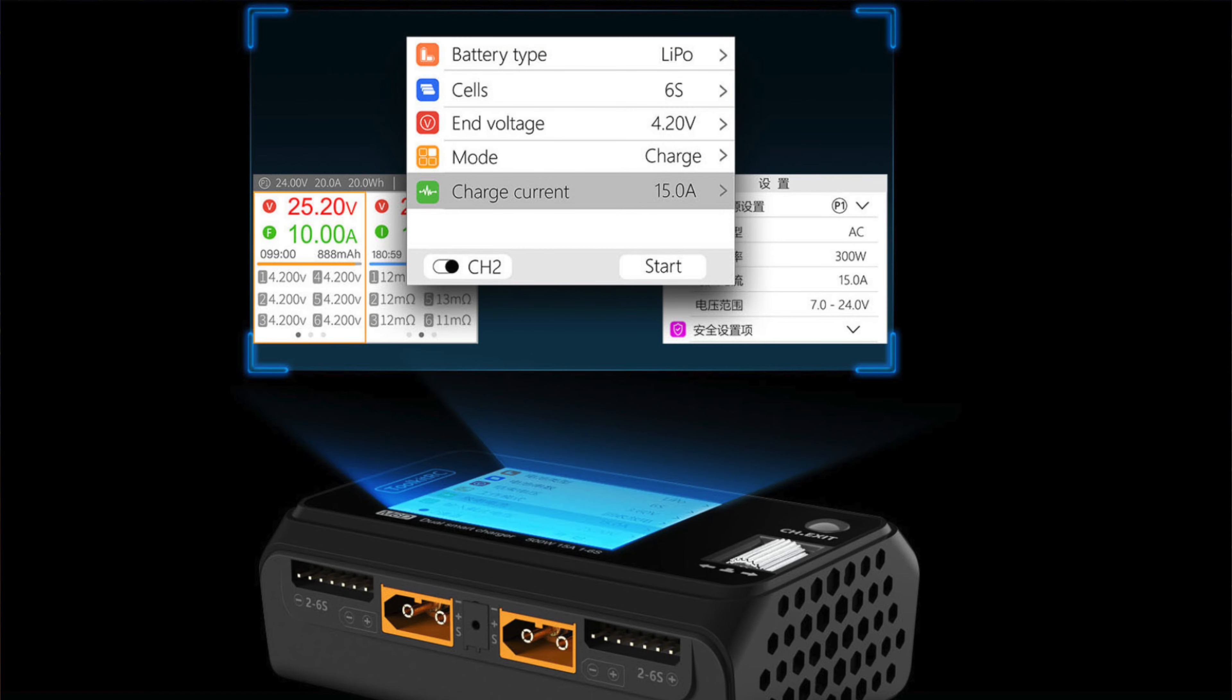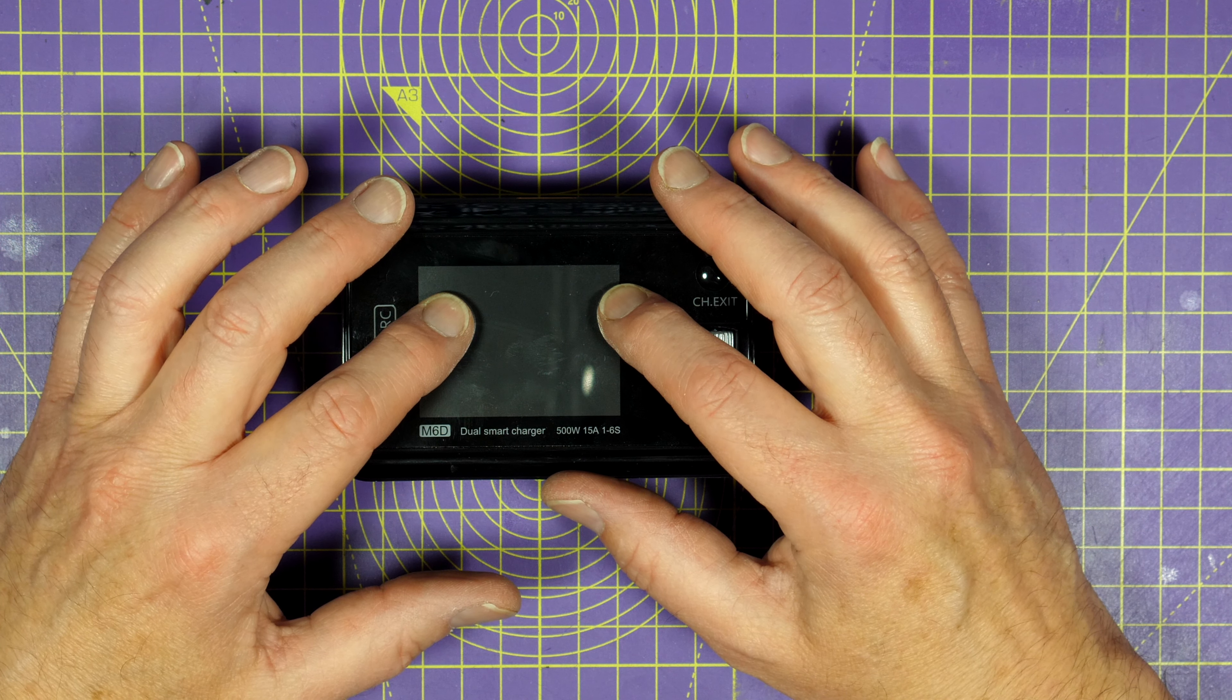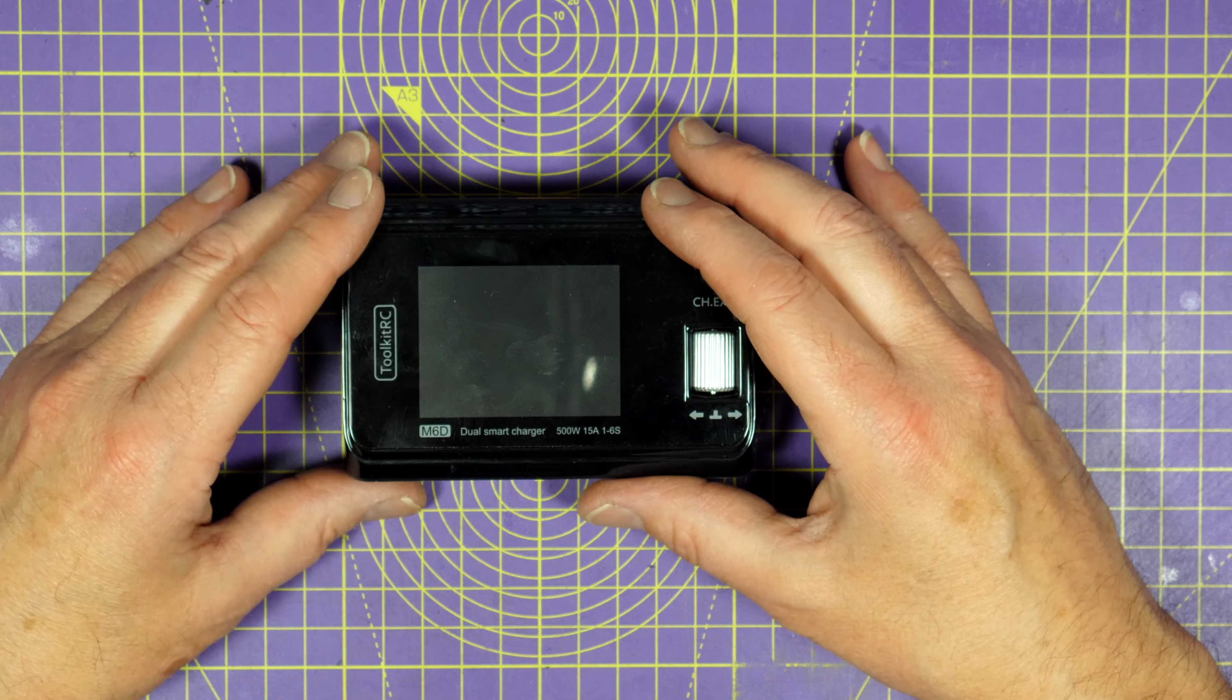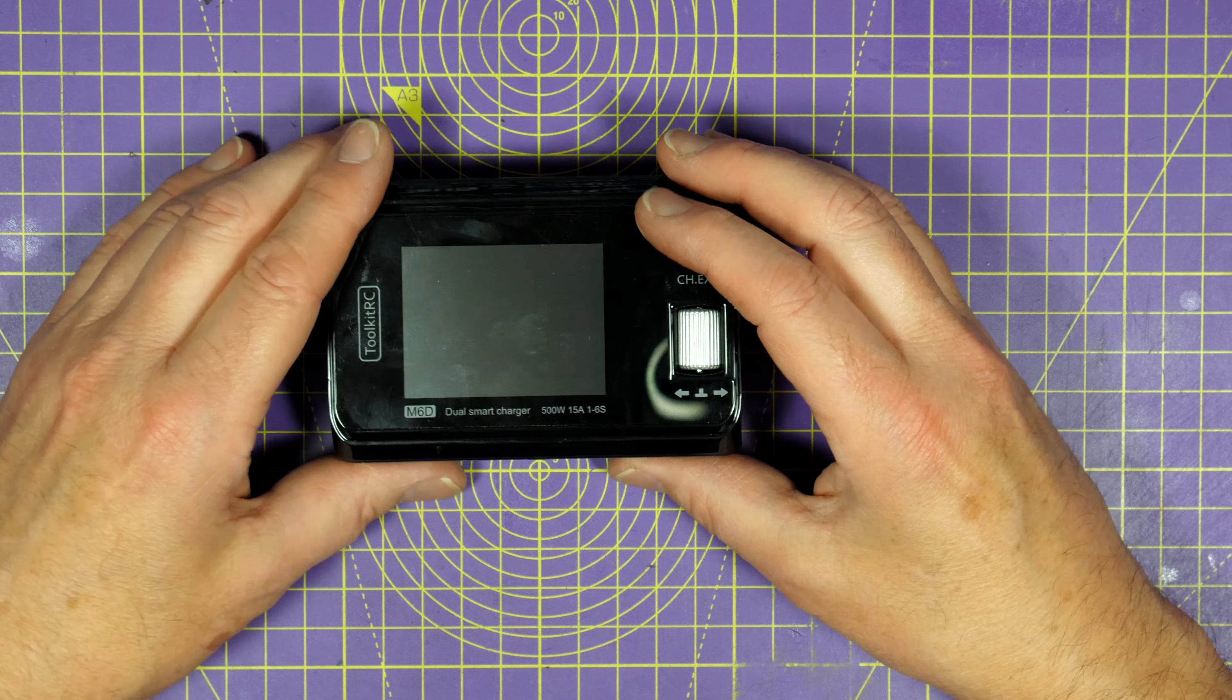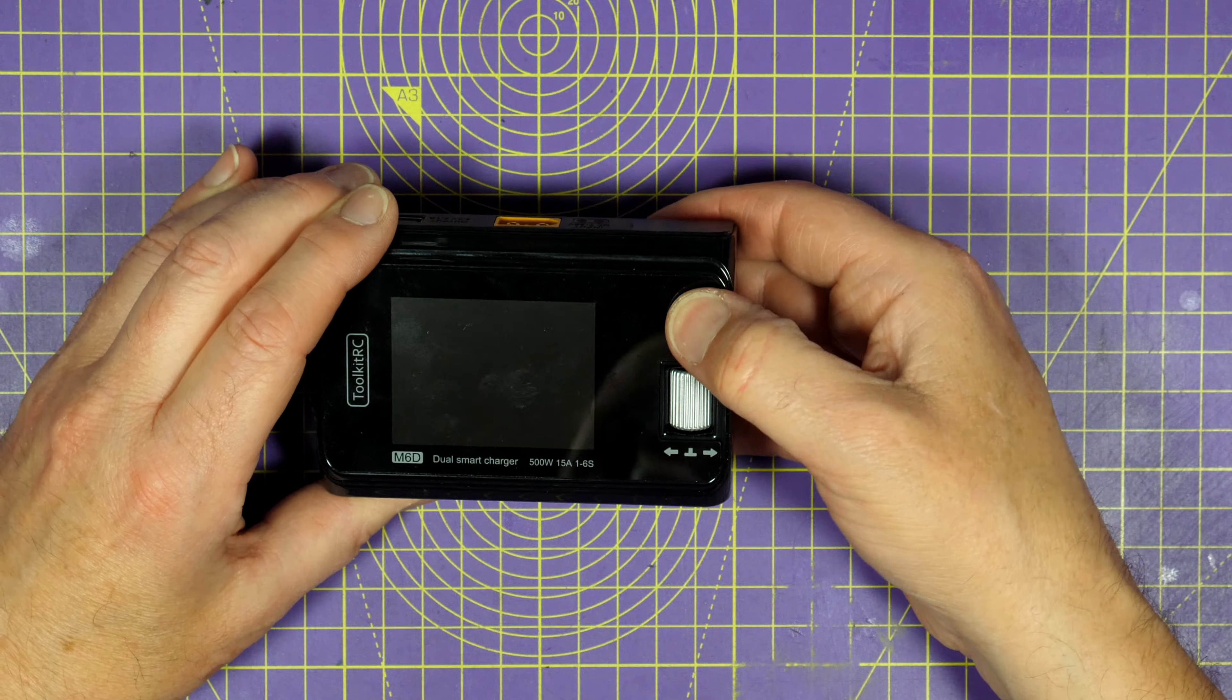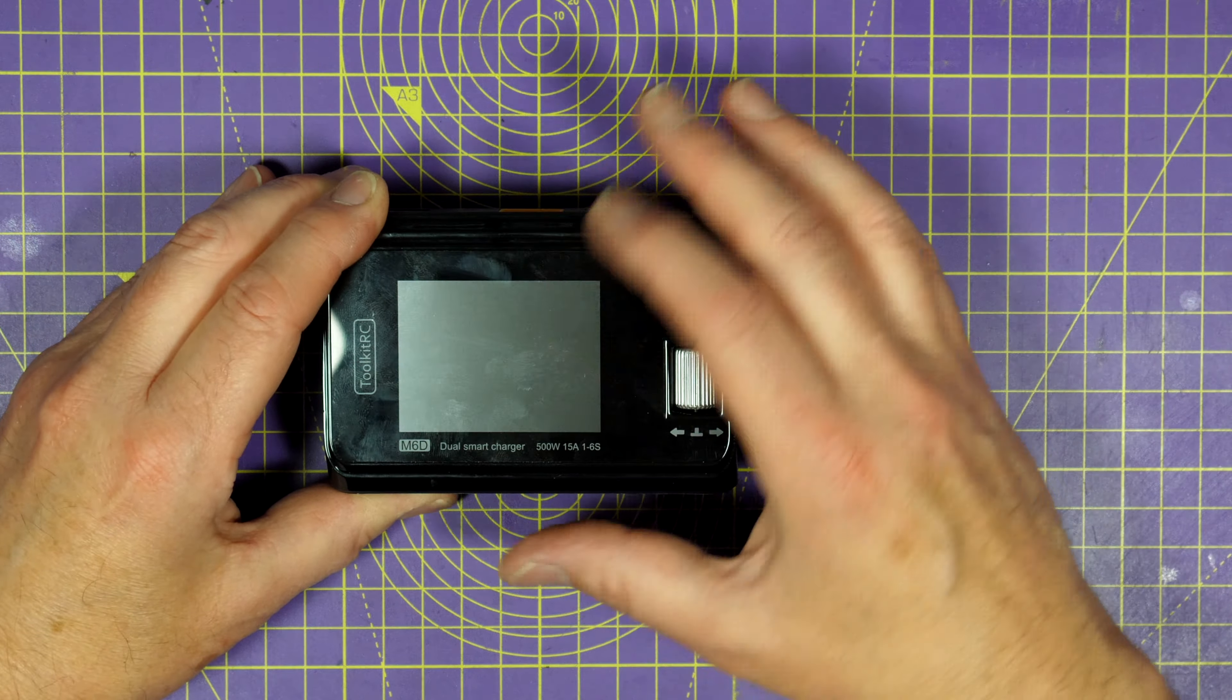It's got a very nice IPS 2.4 inch LCD 320 by 240 pixel display. IPS simply means in-plane switching which means you just get a better viewing angle on this. There's a scroll click wheel here and a little button above it that you use like a back button or escape button when you're navigating the menus.